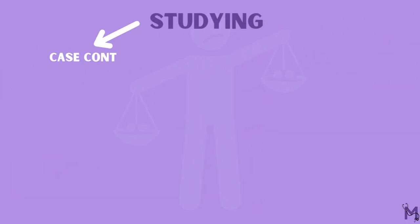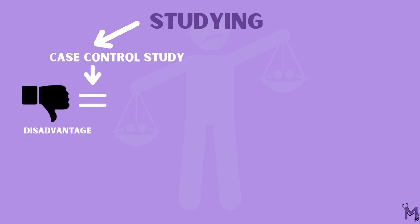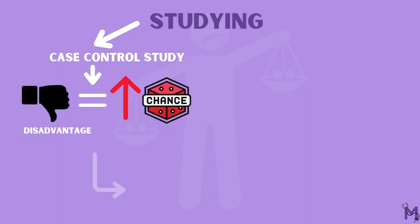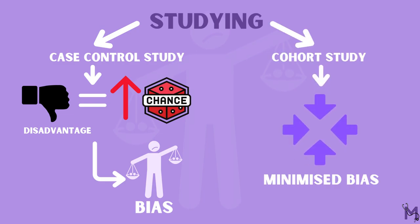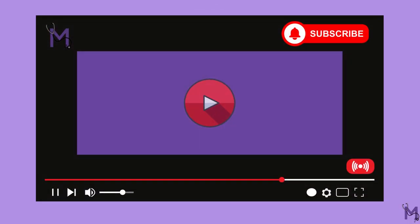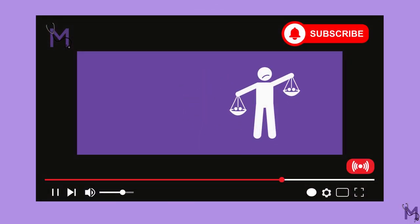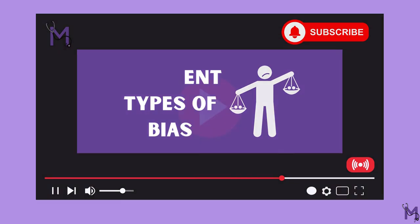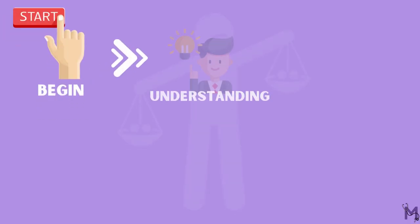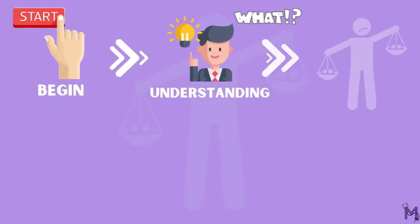While studying case-control studies, we said the disadvantage is the high chance of having bias. But while studying cohort studies, we said certain biases can be minimized. In today's video, we are going to understand what a bias is and the different types of it in both studies. Let's begin by first understanding what a bias is.